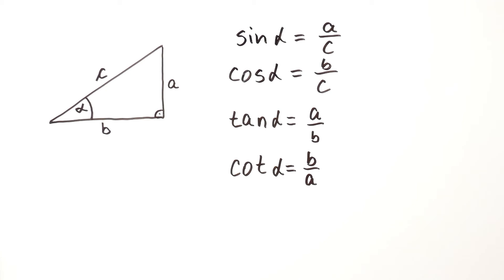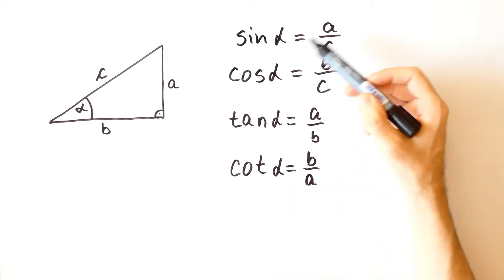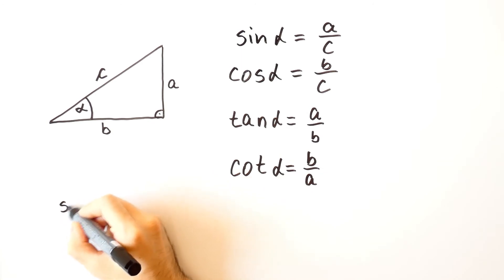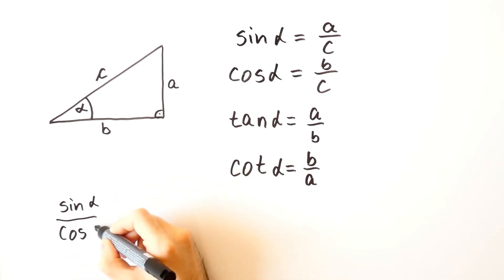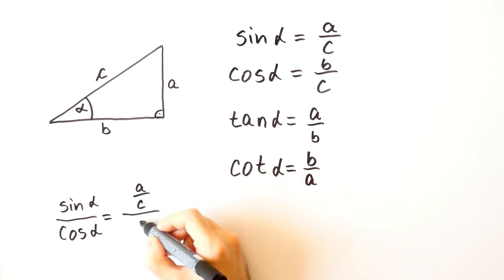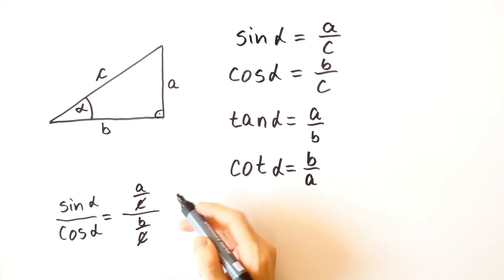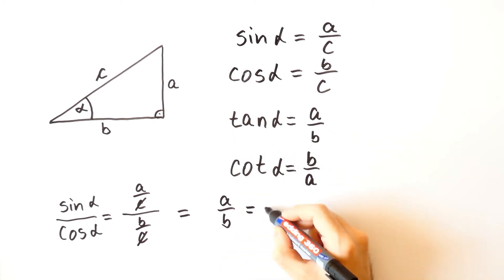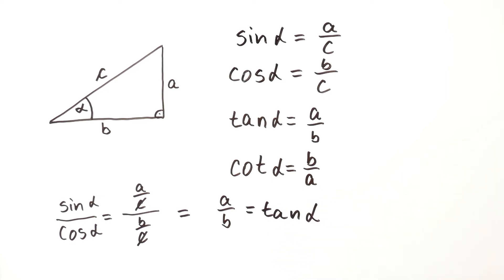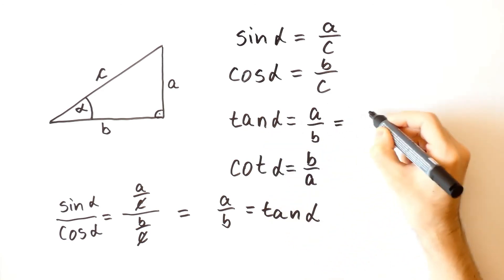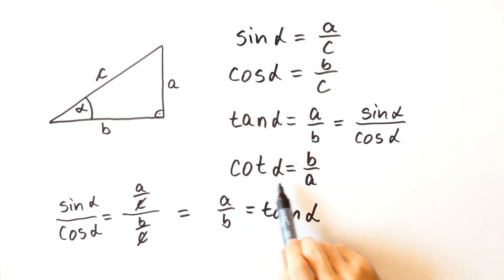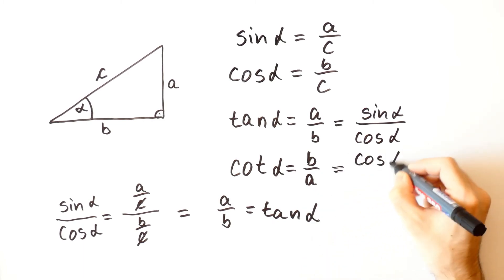What is the relation between the sine of alpha, the cosine of alpha, the tangent of alpha, and the cotangent of alpha? Given that the sine of alpha is equal to a over c and the cosine of alpha is equal to b over c, then the sine of alpha over the cosine of alpha is equal to a over c divided by b over c, and c and c cancel out, so this is equal to a over b — but that is the tangent of alpha. So the tangent of alpha is equal to the sine of alpha over the cosine of alpha. Similarly, the cotangent of alpha is equal to the cosine of alpha over the sine of alpha.